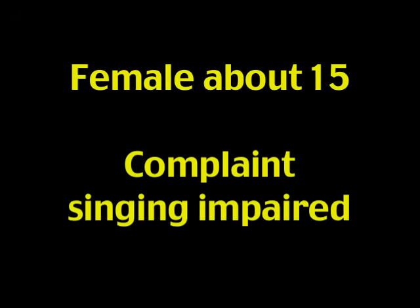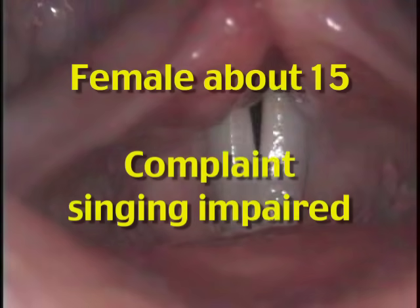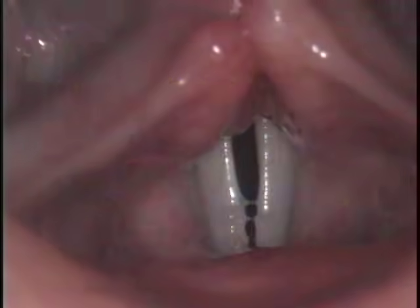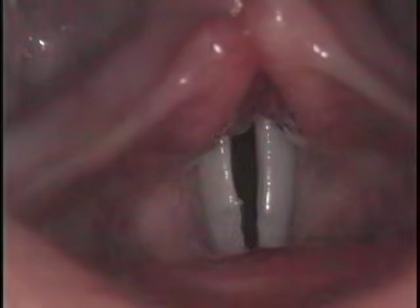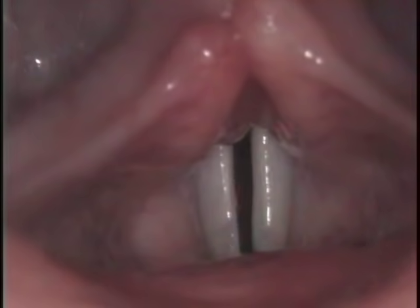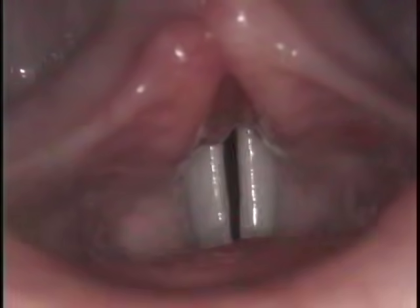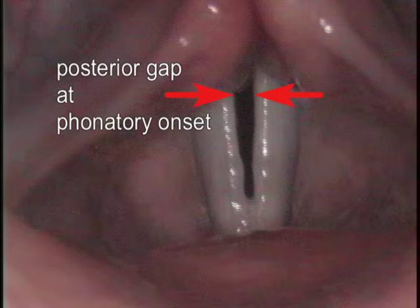The most common example I see of muscle tension dysphonia occurs in young singers, such as this 15-year-old singer who's complaining of difficulty. I'd like you to notice how far apart the vocal cords are posteriorly, which is causing the air leak that you hear.